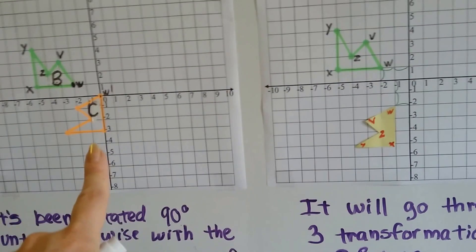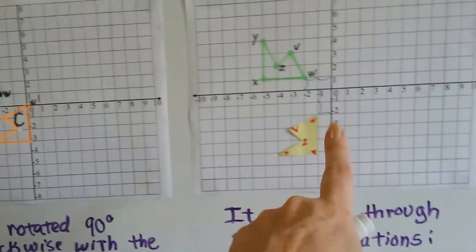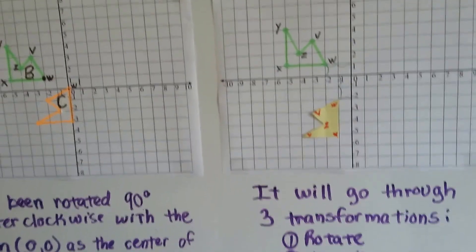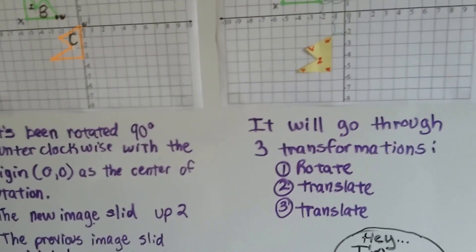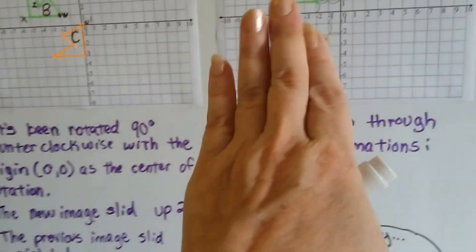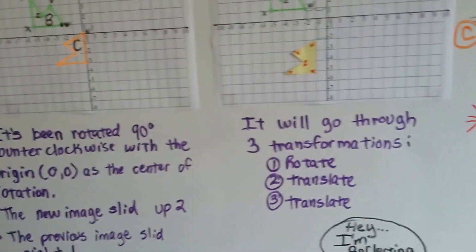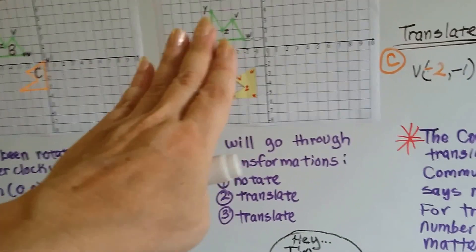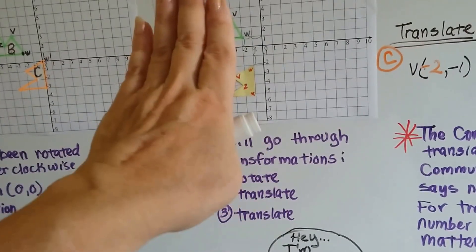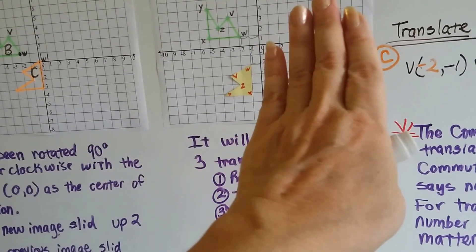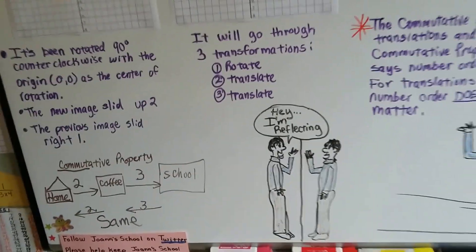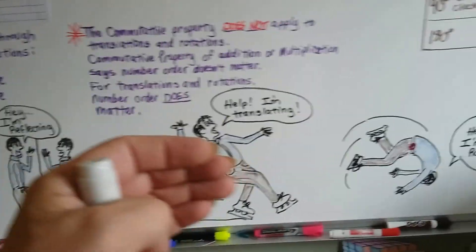So this is the rotation of 90 degrees counterclockwise. We still need it to go up and over so that it's up in this corner — see how it's shoved up into the corner? So it's going to be translated. The new image slid up and over to the right one. It went through a 90-degree counterclockwise rotation, then a translation up and a translation to the right. Remember: translating is sliding and rotating is spinning.